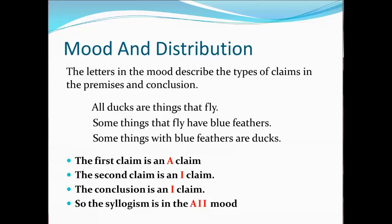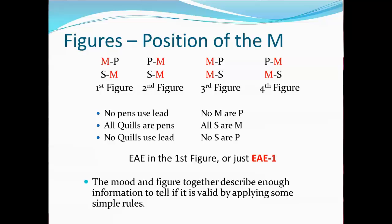Just knowing that the major premise is an A claim doesn't tell us where the predicate term appears. The predicate term in the conclusion must appear in the major premise, but it can appear in either the subject or predicate position. The figure of a syllogism indicates the position of the middle term — there are four possible combinations. We only need to consider the major and minor premises since the middle term never appears in the conclusion in a well-formed syllogism. Each combination is given a number, always considered in the same order, so a syllogism can be assigned one of four numbers identifying the position of the middle term. In this example, the mood of the syllogism is E, A, E, and its figure is 1.